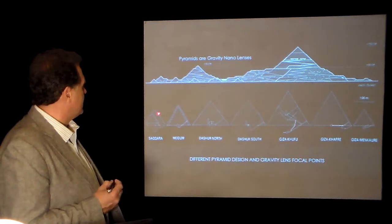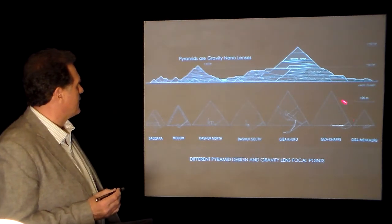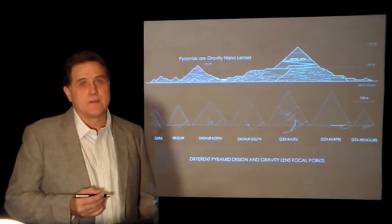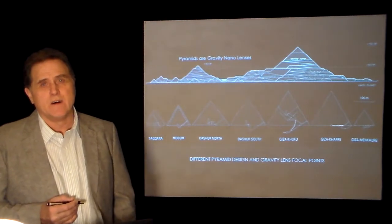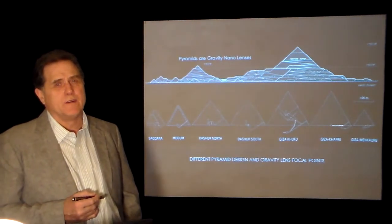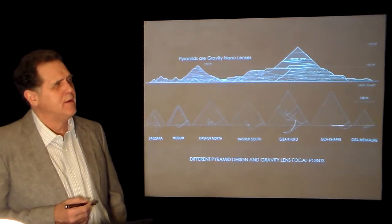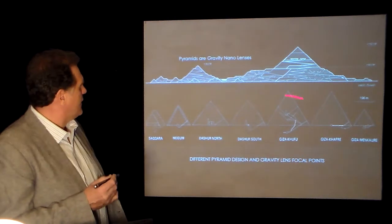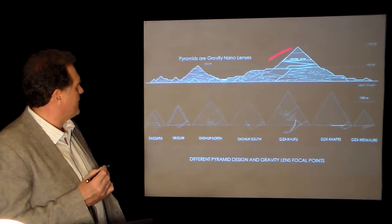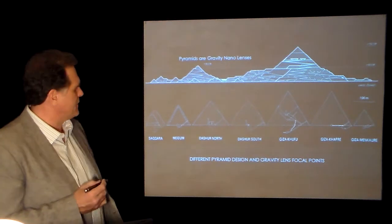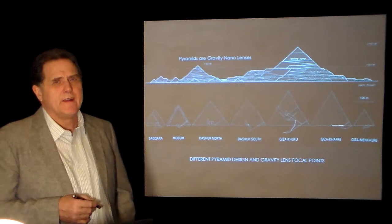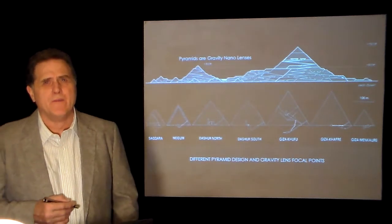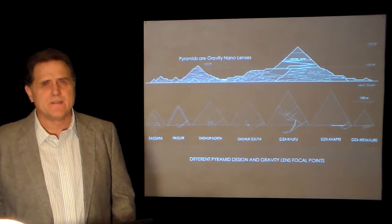They're just amazing, these pyramids, what they've come up with. And consequently, recent discoveries — they found an ocean of fresh water under the Giza Plateau or in the Sahara Desert. There's an ocean there. And they also found an ocean of fresh water under the Shen Pyramid. So, again, more physical evidence. I rest my case. These pyramids are lenses.